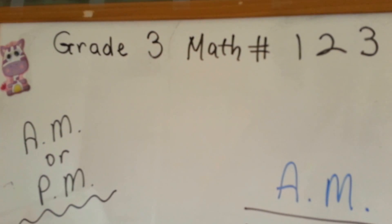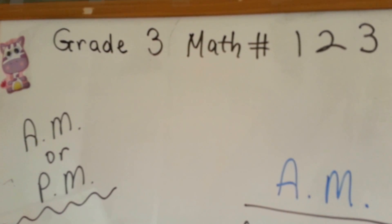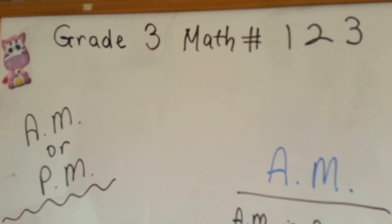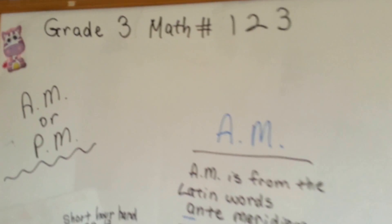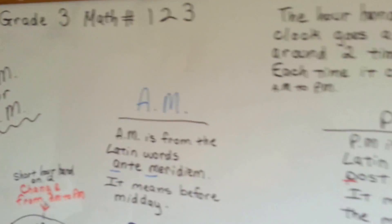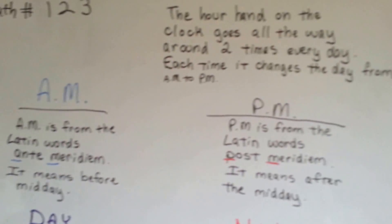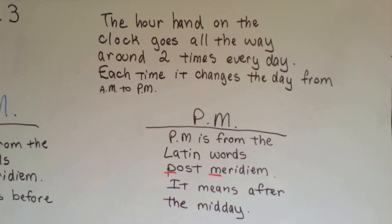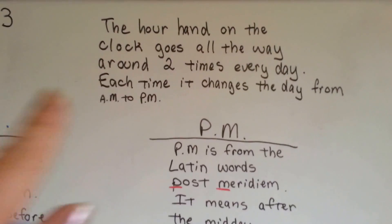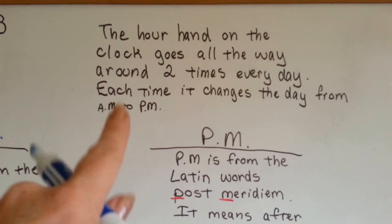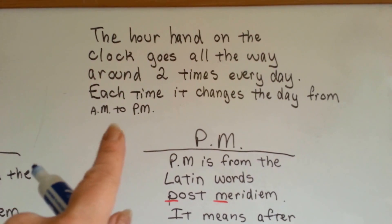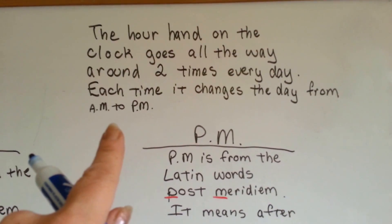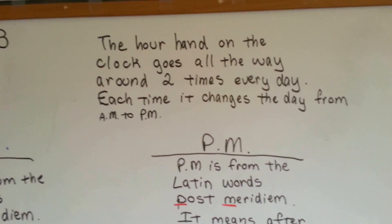Grade 3 Math, number 123: AM or PM. I'm going to talk about clocks again for a few minutes. The hour hand on the clock goes all the way around two times every day, and each time it changes the day from AM to PM.